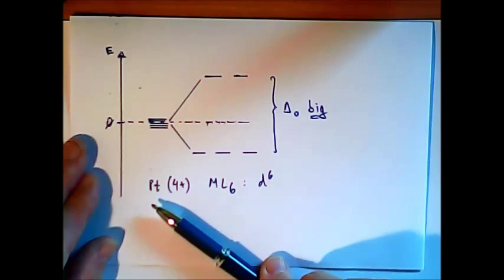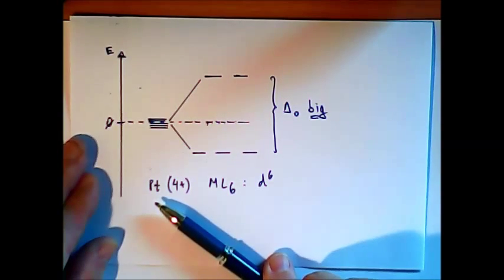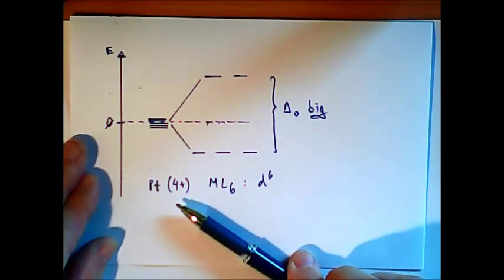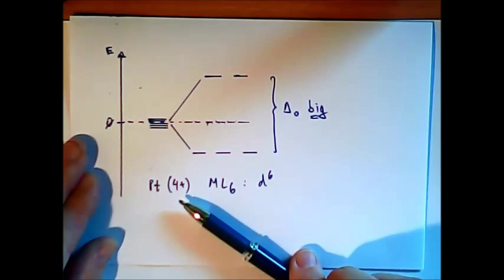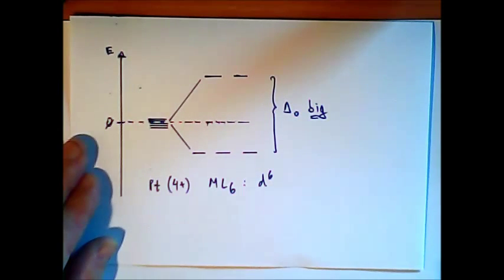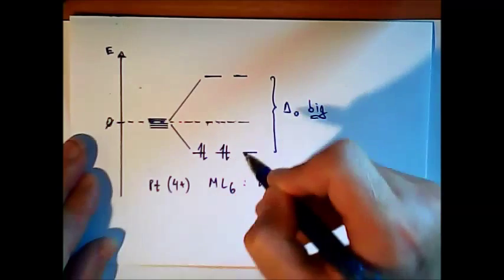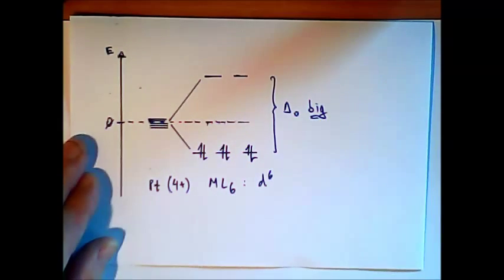It must be big independent of the ligand. Even the water ligand will not change this picture. Because the metal ion has an influence on the amount of delta O. If we have an element in the lower rows, delta O becomes bigger. And in addition if we have a high charge, delta O also becomes bigger. So we can assume this complex is low spin and the six electrons are all in the lower levels.